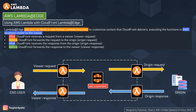The second event is origin request — the outgoing request from CloudFront. It triggers the Lambda code before CloudFront forwards the request to the origin. The third event is origin response — an incoming response from the origin. It triggers the Lambda code after CloudFront receives the response from the origin, and the function gets executed even if there are any errors returned from the origin.